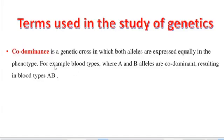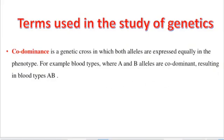Codominance is a genetic cross in which both alleles are expressed equally in the phenotype. For example, blood types where we have A and B alleles are codominant and can result in blood type AB.